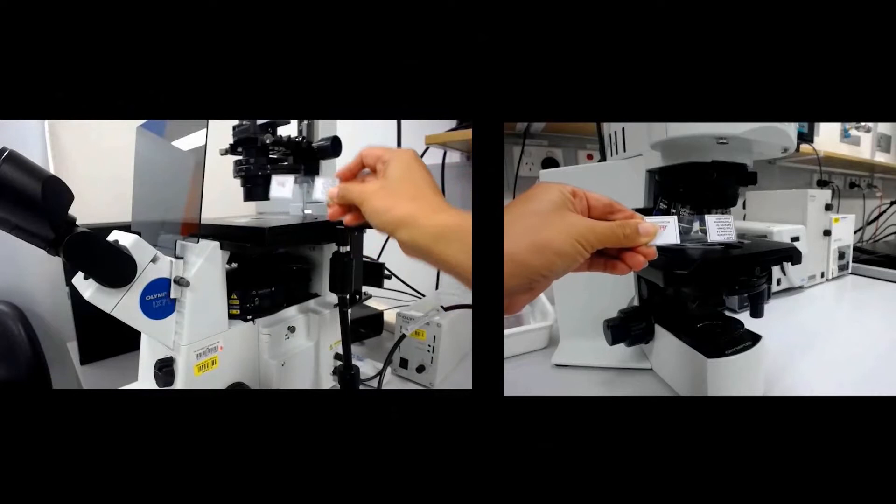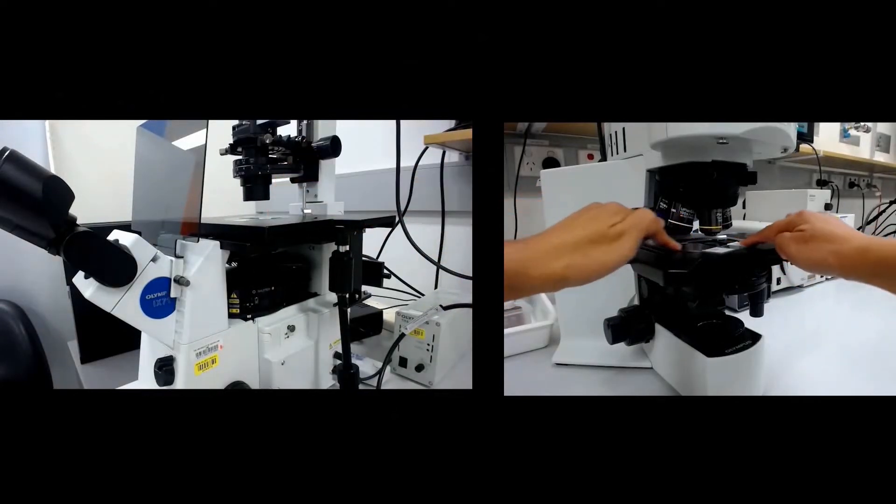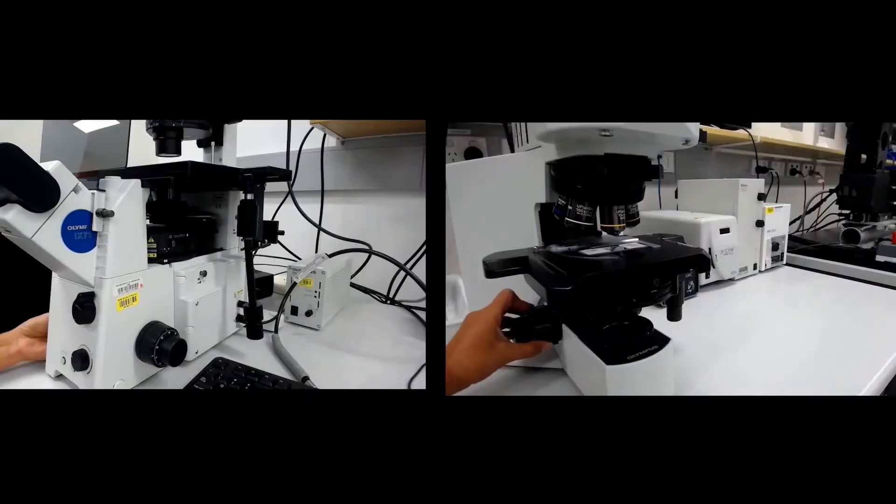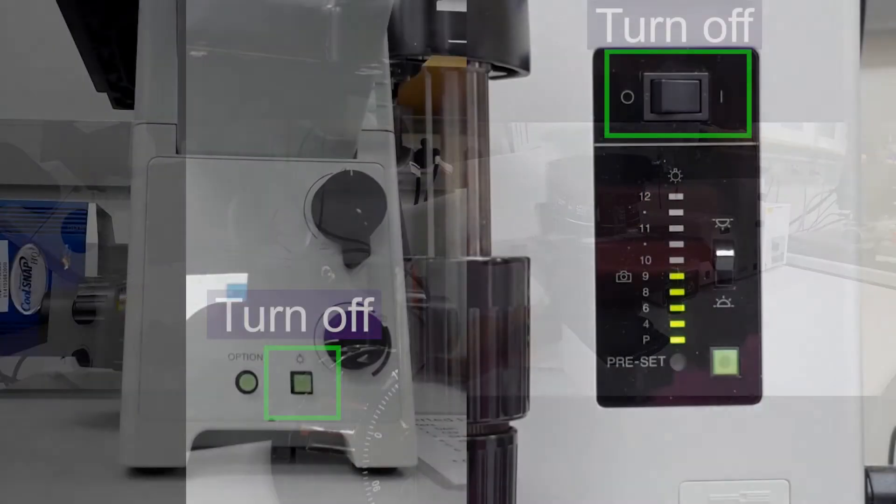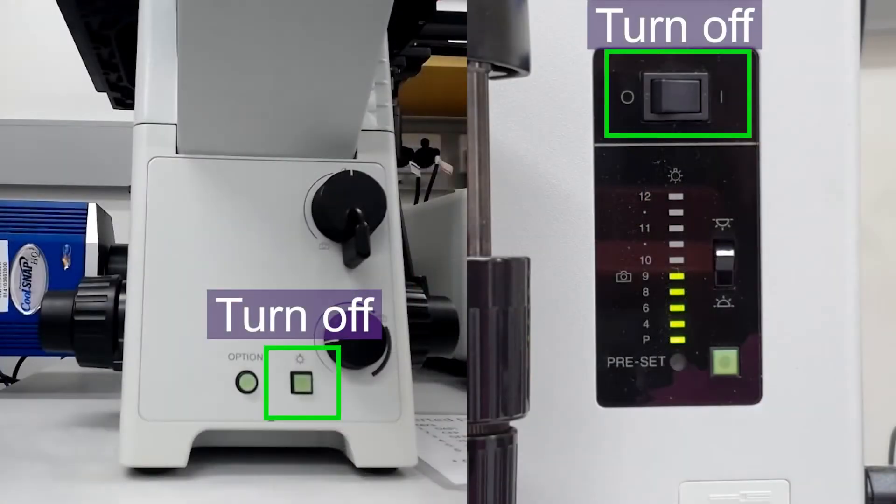Mount your sample on the microscope with the coverslip facing the objective and focus on the sample. Make sure to turn the bright field light off.